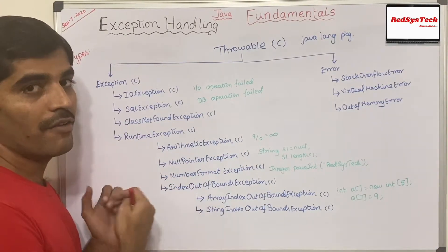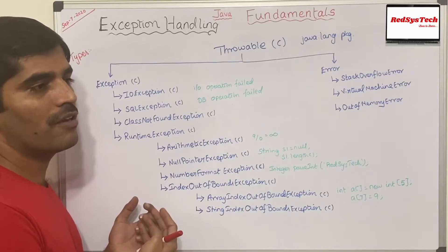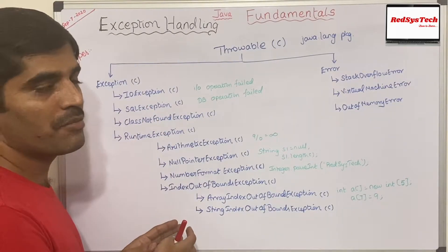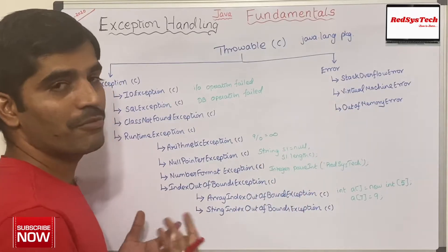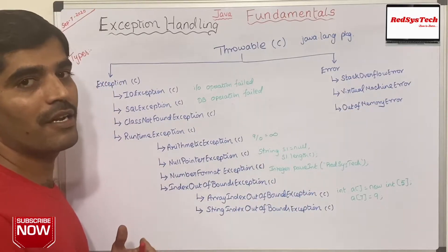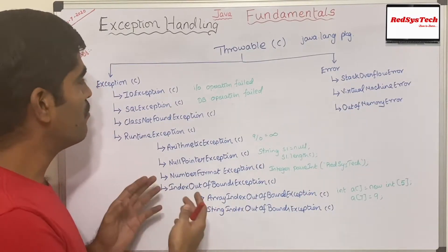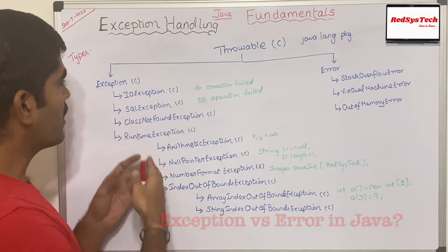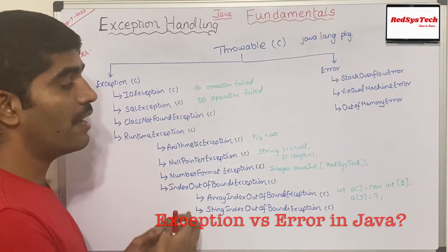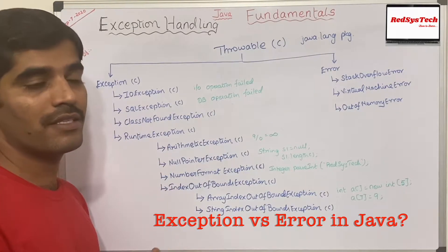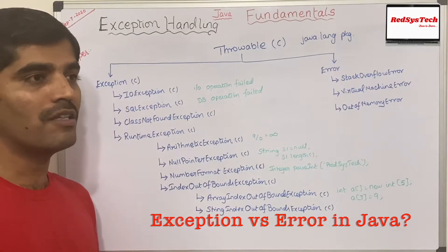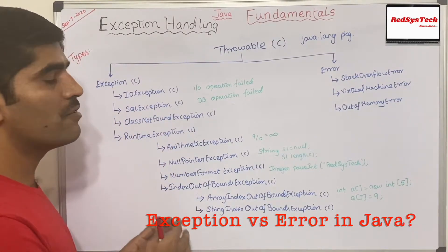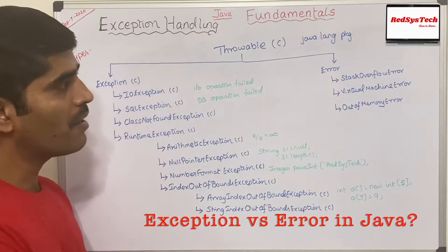Exceptions are caused by our program — whatever the program is throwing, we call it an exception. Errors are not caused by our program. Exceptions are thrown by our program, and they are not thrown by any resources — like a machine not being available, a memory issue, or anything like that.